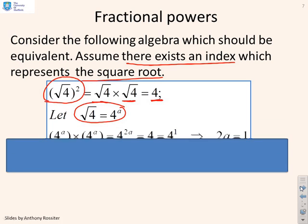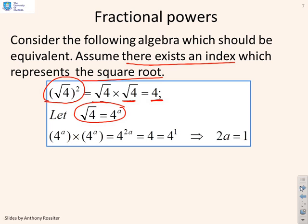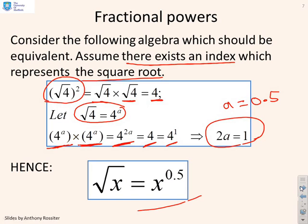Now if that's the case, if I write 4 to the power a times 4 to the power a, using my rules for indices I'm going to get 4 to the power 2a, but I know that if 4 to the a is the square root of 4 then 4 to the 2a must be 4 or 4 to the 1. And that tells me that 2a must be equal to 1. In other words, a equals a half. So this is what we've got, the square root of x can be written as x to the power 0.5.